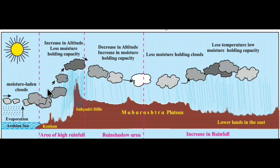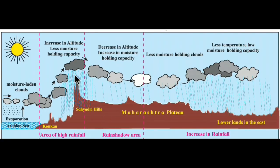This is the model of Maharashtra or the Maharashtra Plateau. These are the South-West monsoon winds coming to India. When the South-West monsoon winds arrive, here we are having Sahyadri hills or Western Ghats. The Sahyadri hills are acting as a barrier — the monsoon winds cannot pass.